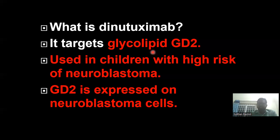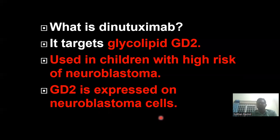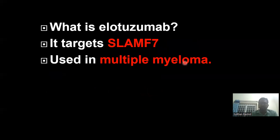Now comes dinutuximab. This targets glycolipid GD2, which is expressed on neuroblastoma cells. Neuroblastoma commonly occurs in children, so dinutuximab is used in children with high-risk neuroblastoma.